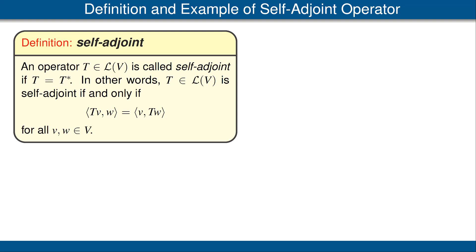Recall that a linear map from a vector space to itself is called an operator. Also, the set of all operators on a vector space V is denoted by L(V). Now we come to an important definition: an operator T on V is called self-adjoint if T is equal to its adjoint.